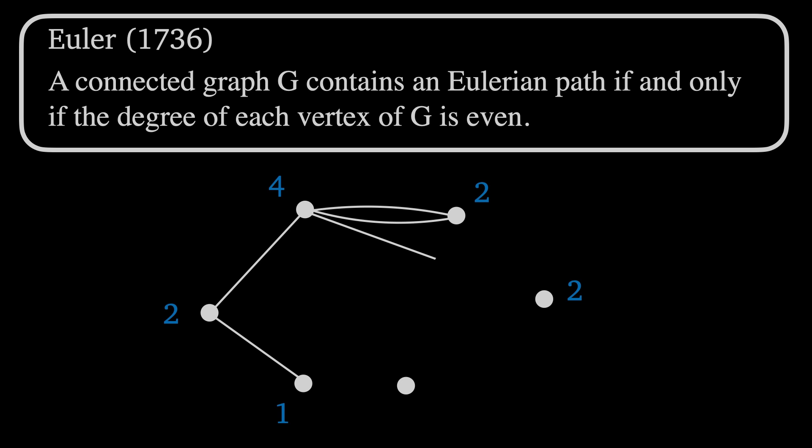Since the degree of the graph of the Königsberg problem contains vertices with odd degrees, finding such a path is therefore impossible.